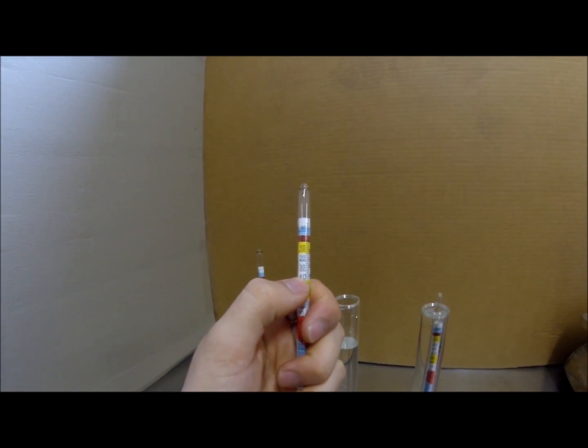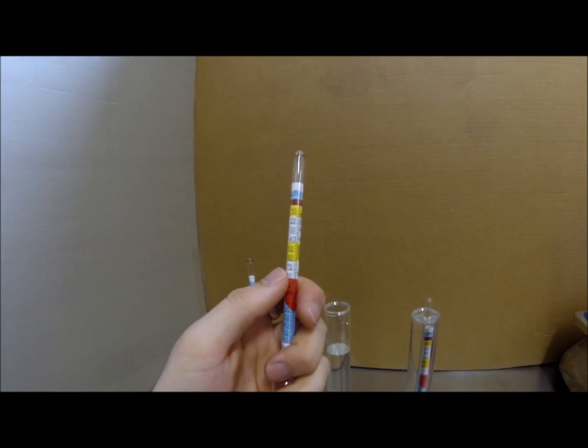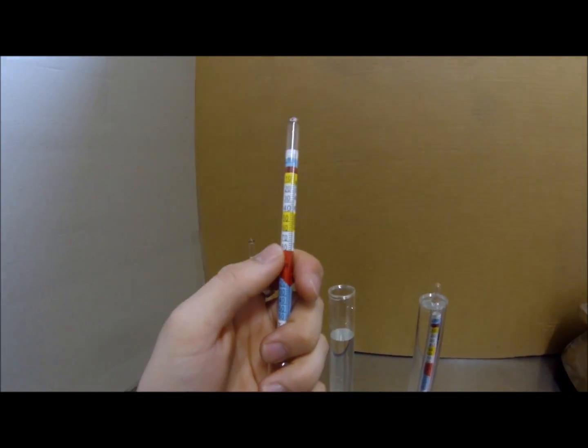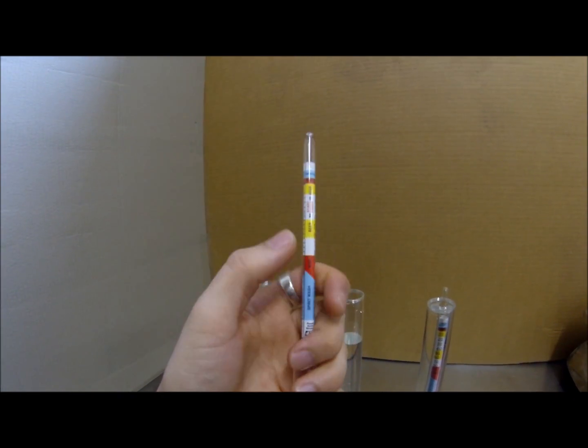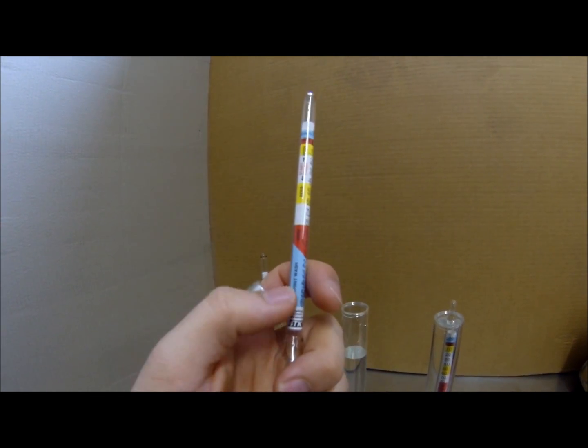So that specific gravity refers to gravity in reference to water. What does this all mean? What does it tell us about our brew? When you start off, we have three bands here. We have a yellow band for beer, a red band for wine, and a blue band for spirit.